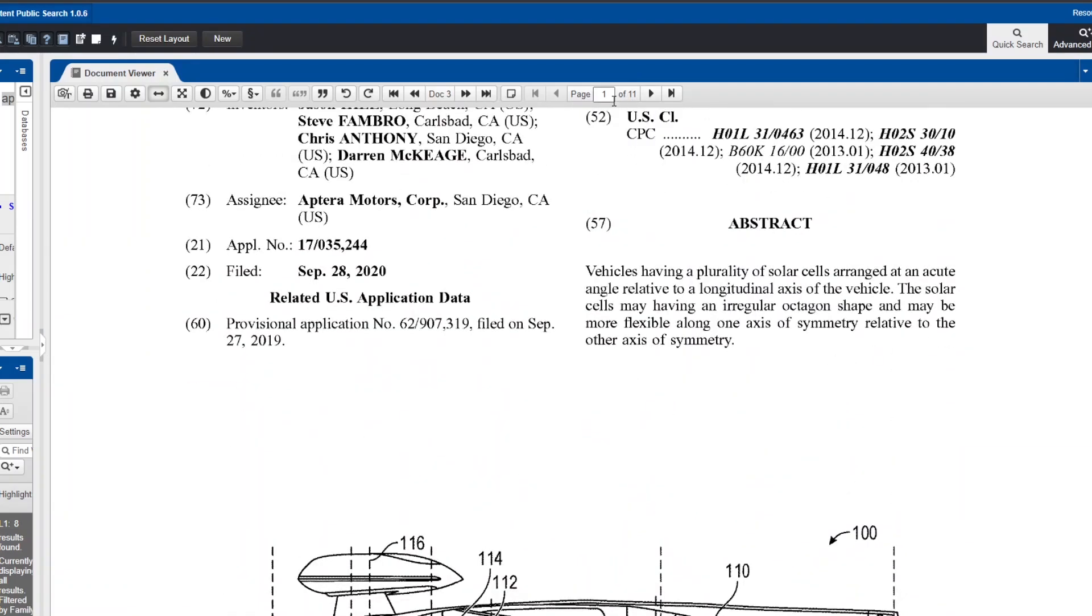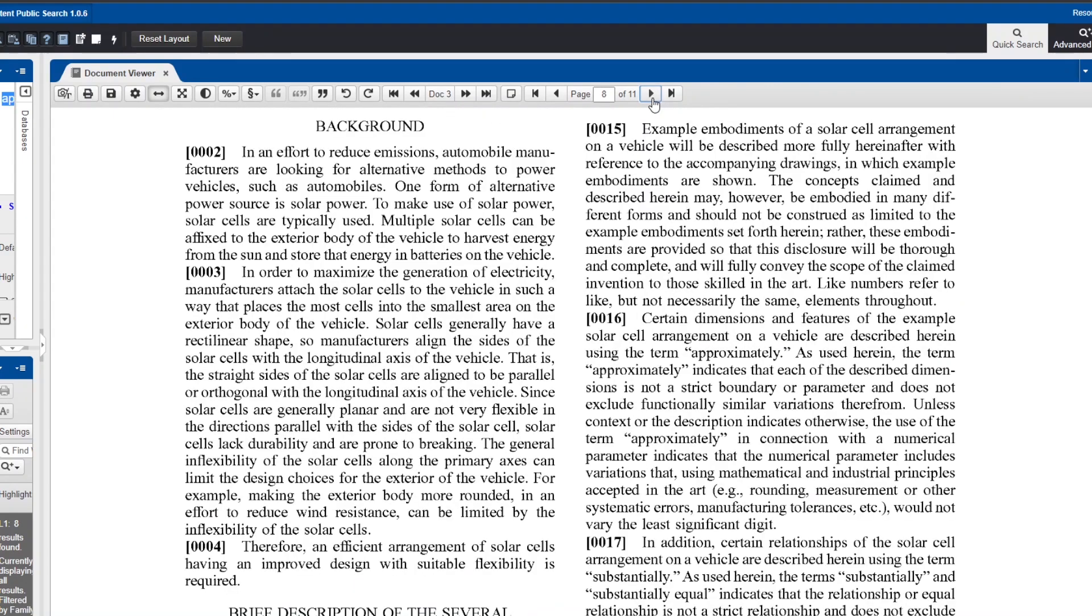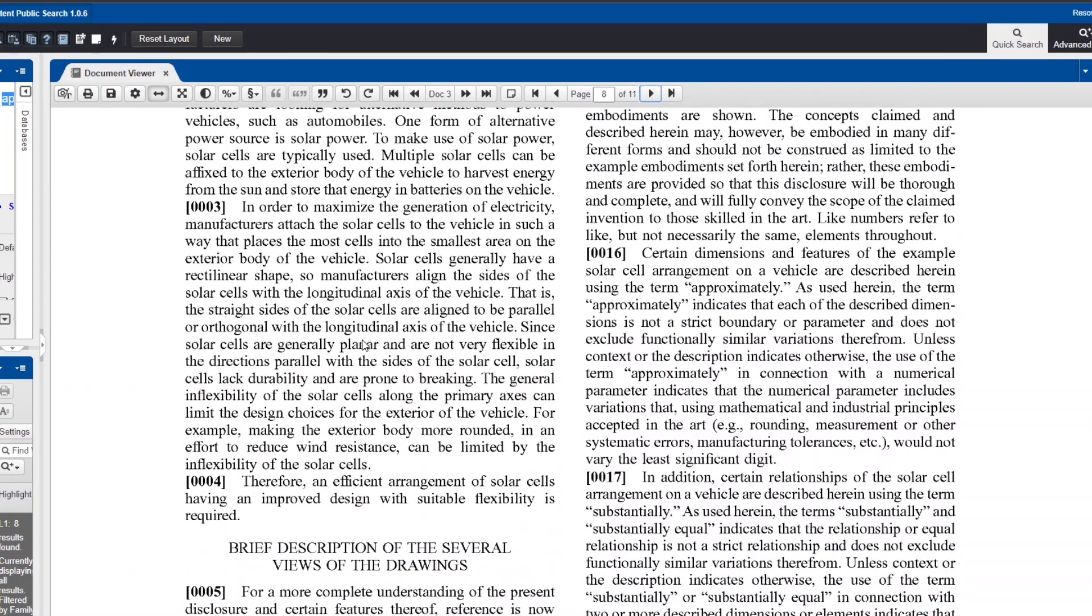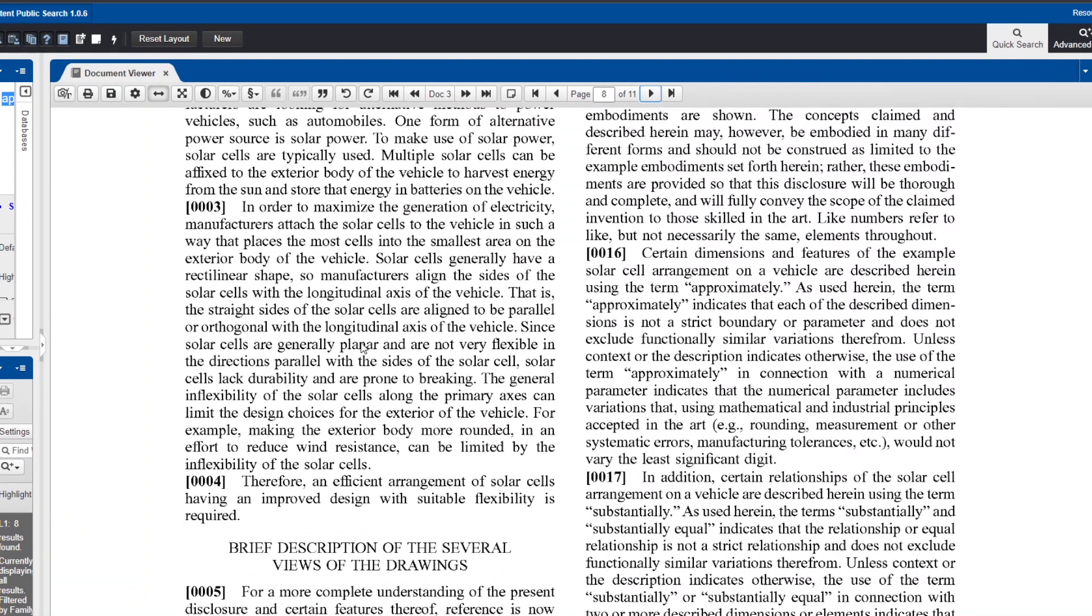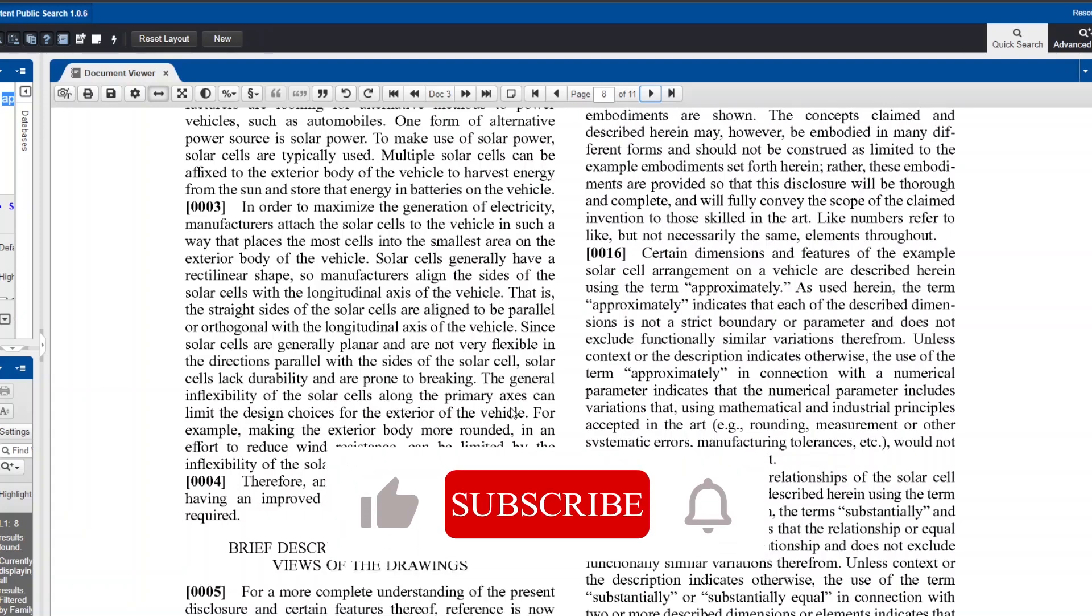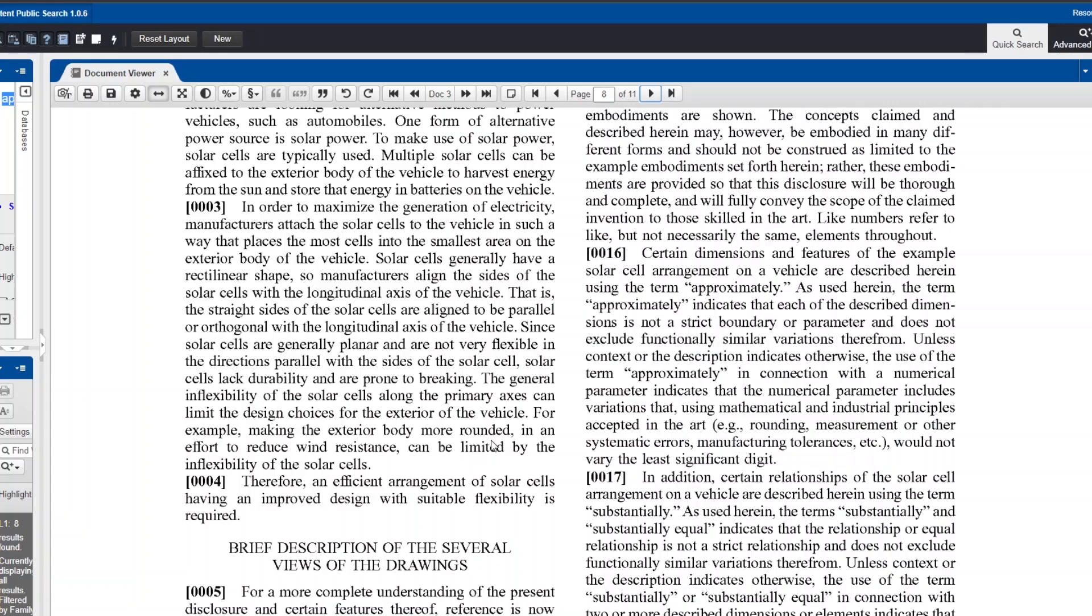And the reasoning behind that, according to this, was that it made it more flexible. So they said, since solar cells are generally planar and not very flexible in the direction parallel with the sides of the solar cell, solar cells lack durability and prone to breaking. The general inflexibility of solar cells along the primary axis can limit the design choices of the exterior of the vehicle, for example, making the exterior more rounded in an effort to reduce wind resistance and can be limited by the inflexibility of the solar cells.